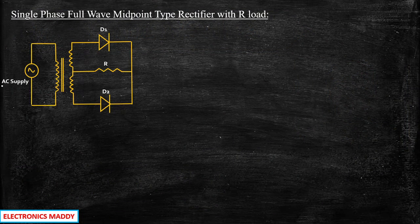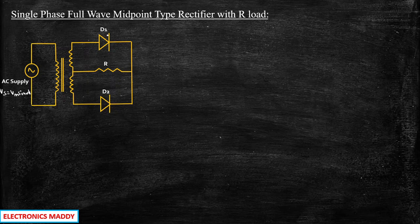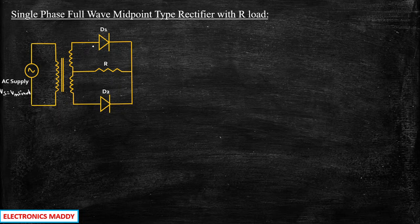This is the circuit diagram of a single phase full wave midpoint type rectifier. We have an AC power supply which is sinusoidal in nature, represented as Vs = Vm sin(ωt). We have a transformer connected through a center-tapped arrangement, wherein in the secondary side a tapping is taken at the midpoint and it is connected to a resistive load. We have two diodes D1 and D2. Comparing with a half wave rectifier circuit, we only have one diode — so one additional diode and a transformer are the key differences.